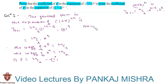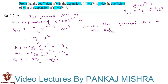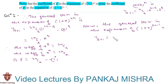Now the general term in the expansion of (1 + x) whole raised to (2n minus 1) is given by T(r+1) = (2n minus 1)Cr into 1 raised to (2n minus 1 minus r) into x raised to r. This is equal to (2n minus 1)Cr into 1 — since 1 raised to anything is 1 — into x raised to r.